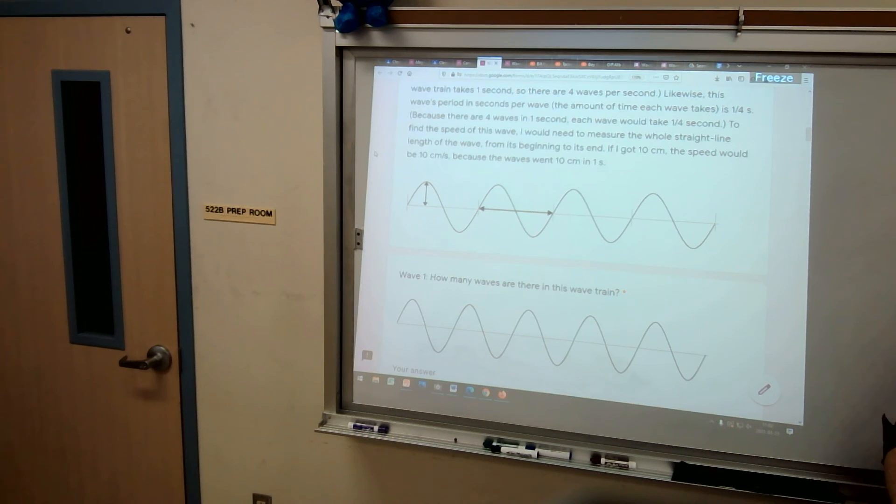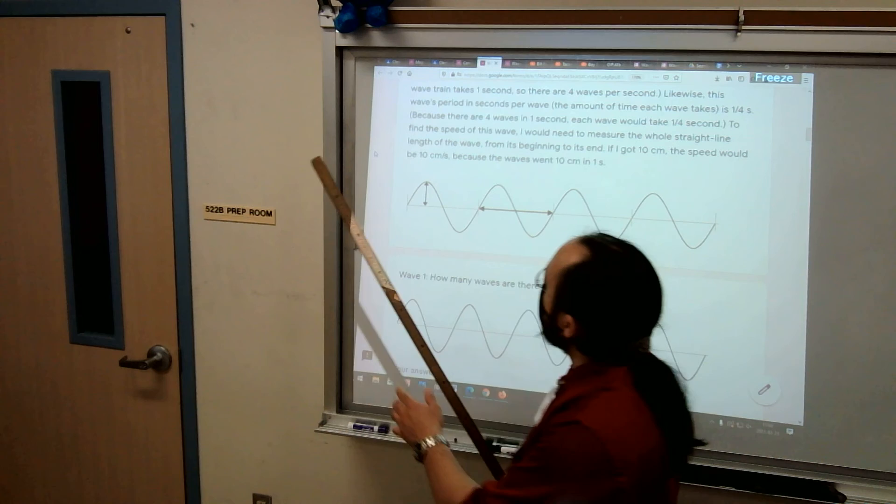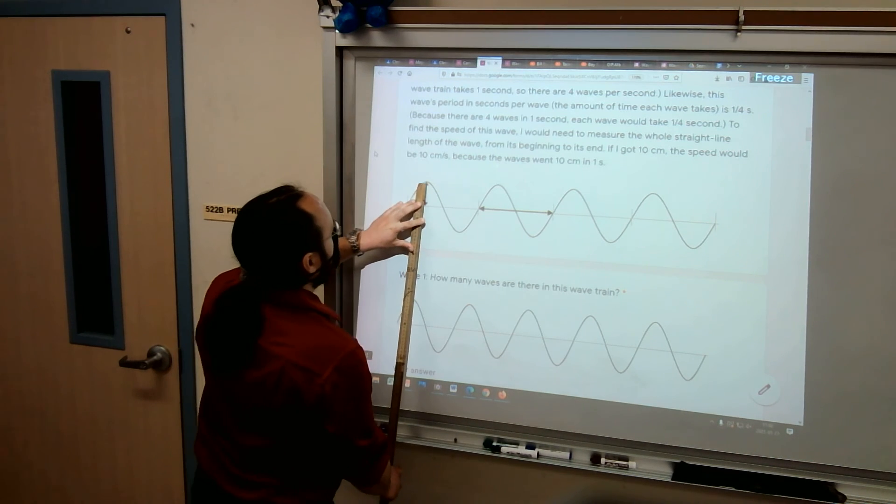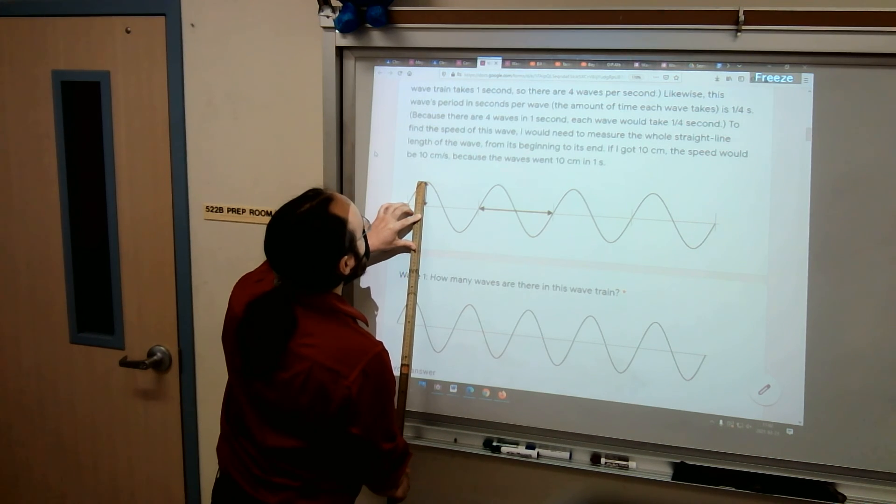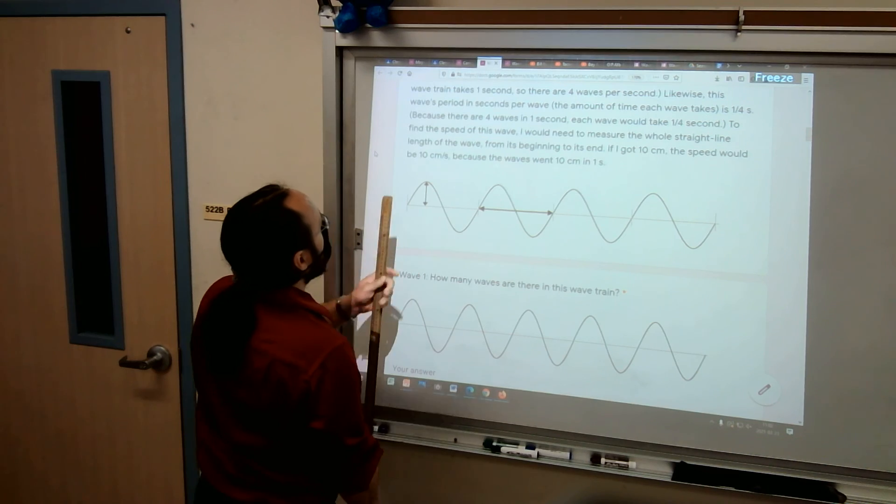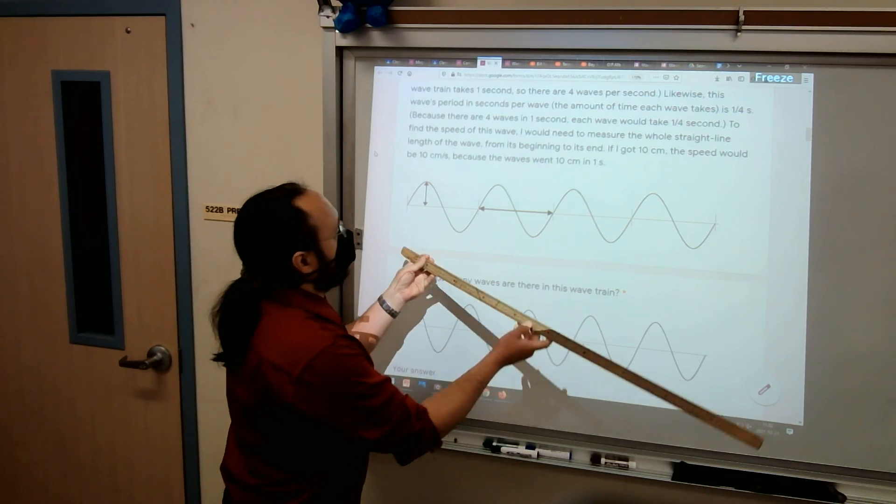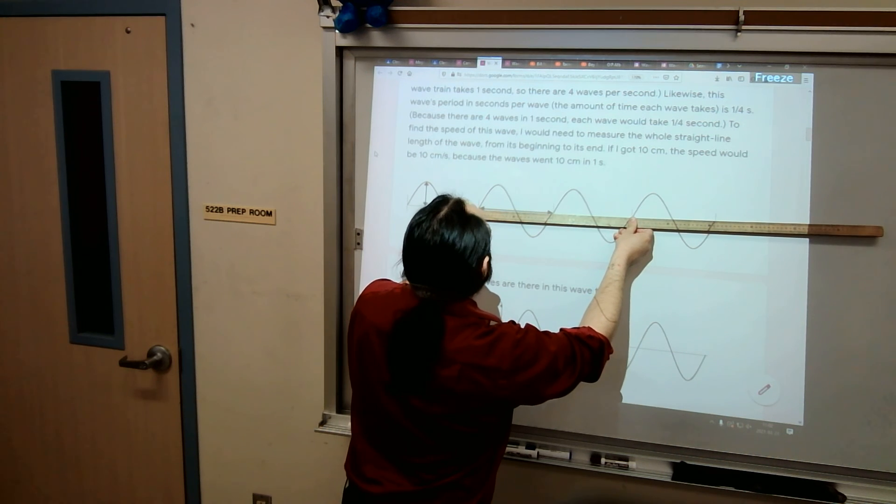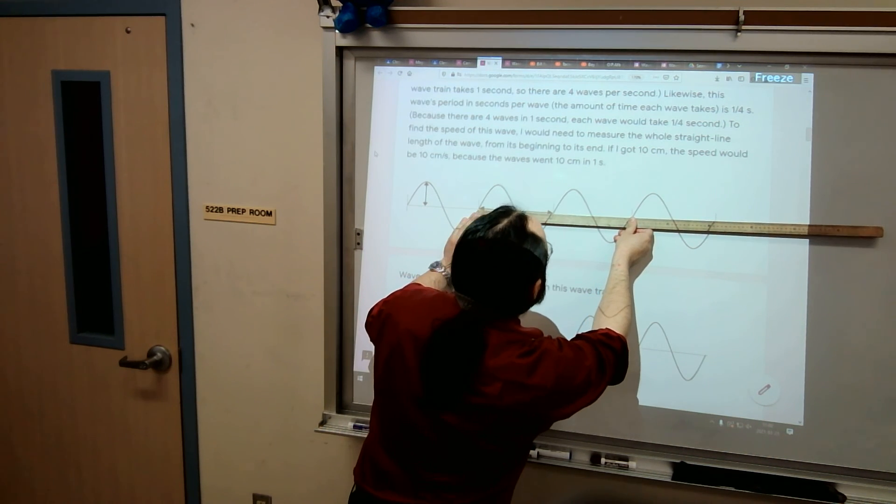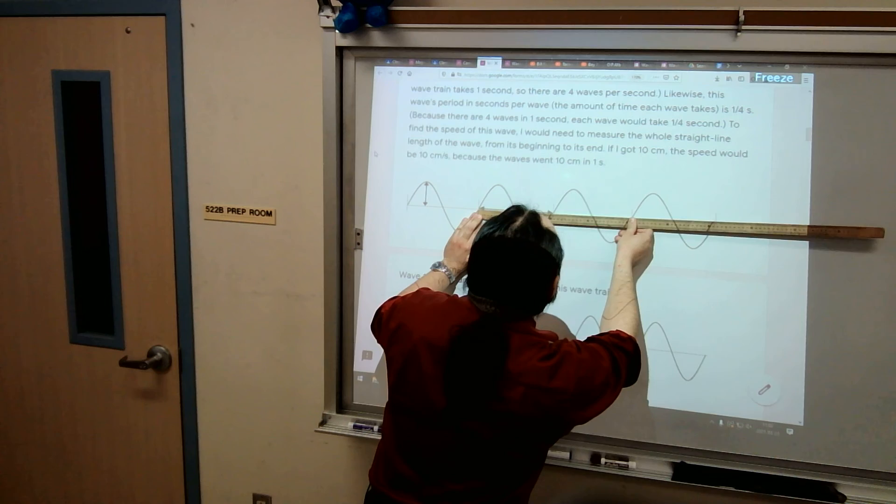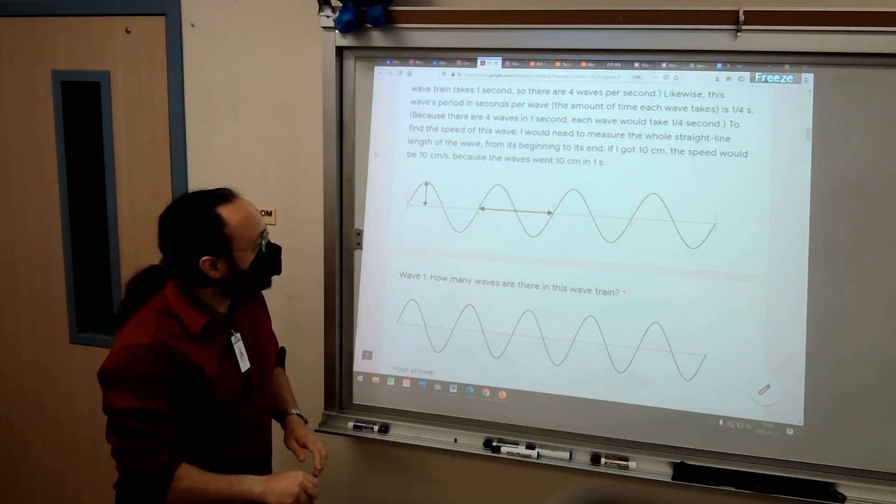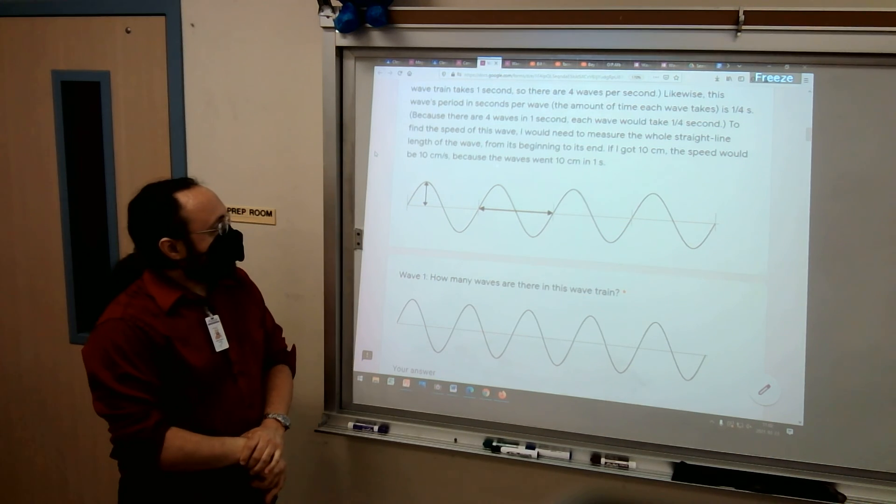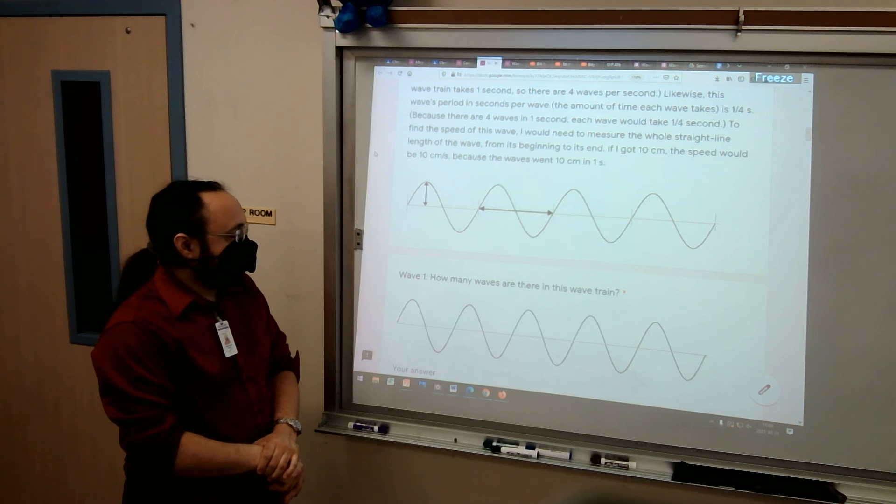I think that's it. I can measure my amplitude from here to here. That's seven centimeters, so I put 0.07 meters. My wavelength, that's about 20 centimeters, maybe 21, 20.5. So I'd say 0.205 meters if I'm saying 20.5 centimeters.